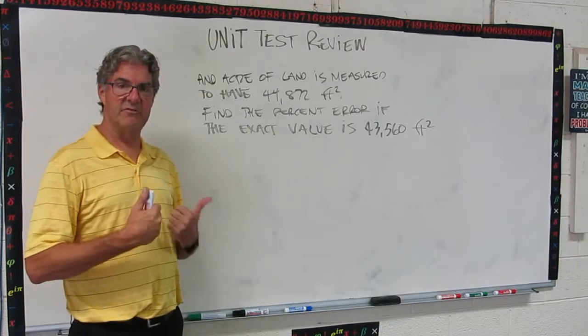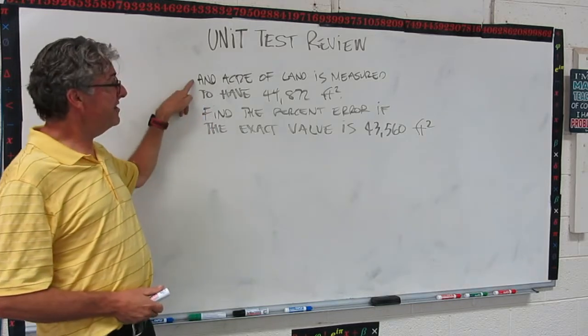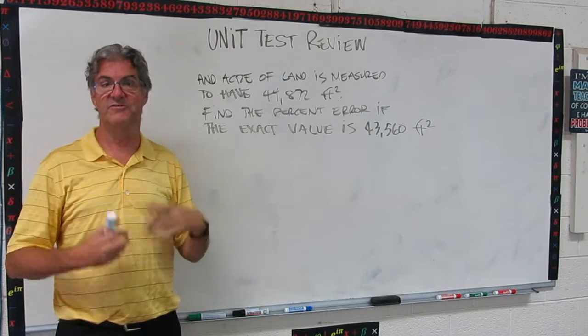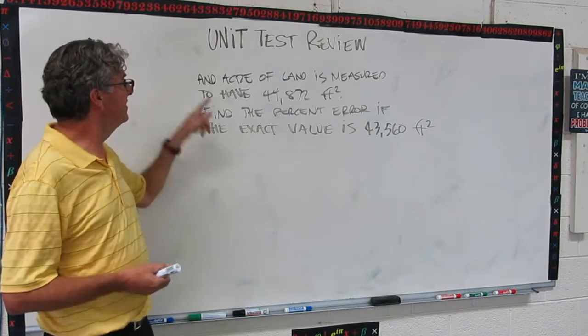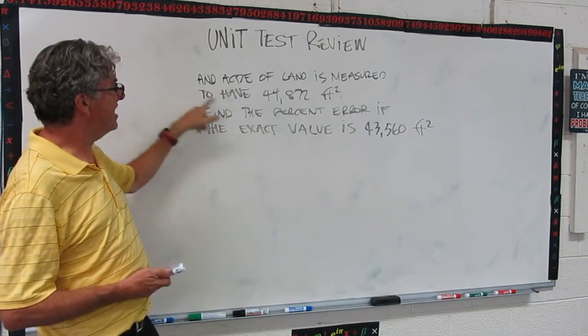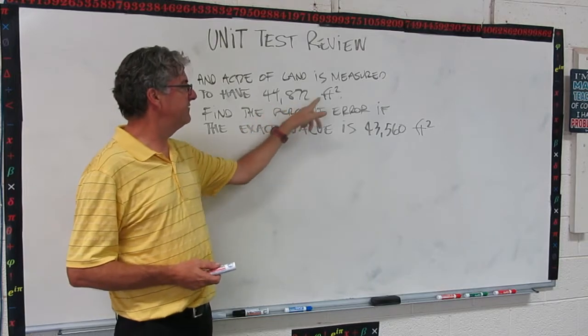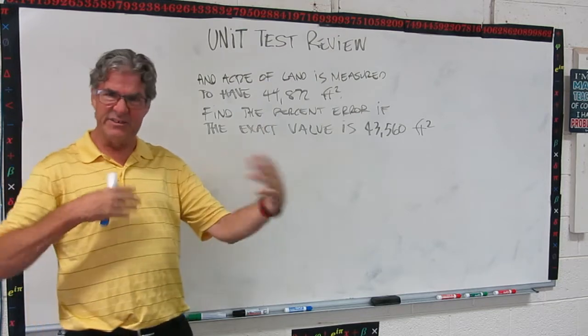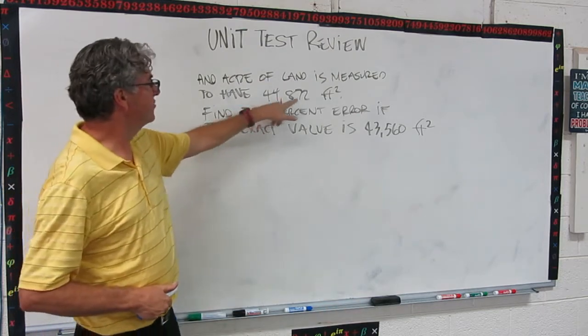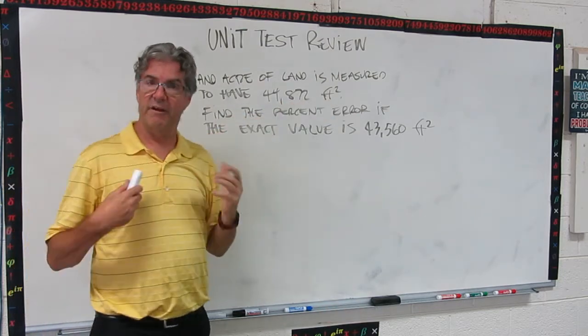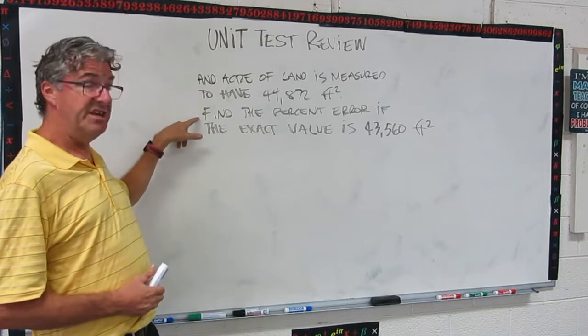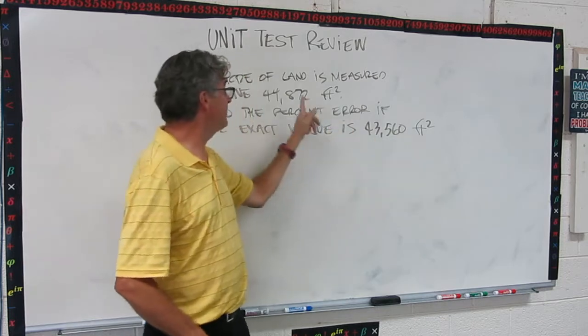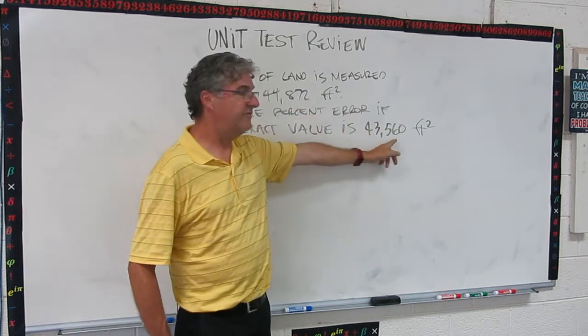Okay, here's another one dealing with percent error. Remember, an acre of land, this is the standard measure for area that we use for land in the United States. If an acre of land is measured to have 44,872 square feet. So this means some folks went out there, they had this thing that they knew was an acre, and they did some measurements, and they calculated the square footage of an acre. Okay, now find the percent error if the exact value is 43,560.